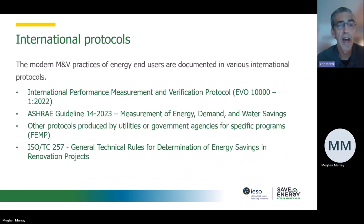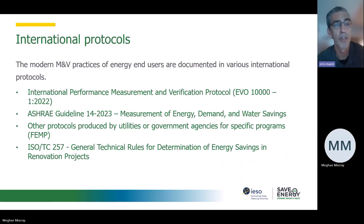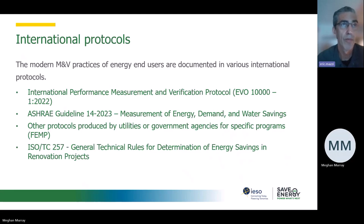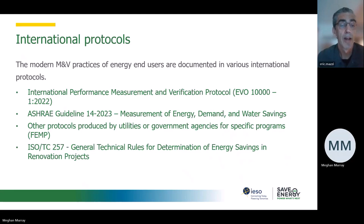These are some common protocols. The IPMVP is listed there. ASHRAE 14 is a very good one, especially for some specific uncertainty calculations — notice there's a 2023 version that ASHRAE just released in August. My recommendation: do not use the ASHRAE 14 2014 version, which is now about ten years old. There's also a 2002 version you can find on the Internet for free — I'd say don't use that either. Use the most recent edition. ASHRAE publications do cost money, but use the most recent protocols. The ISO also has them.